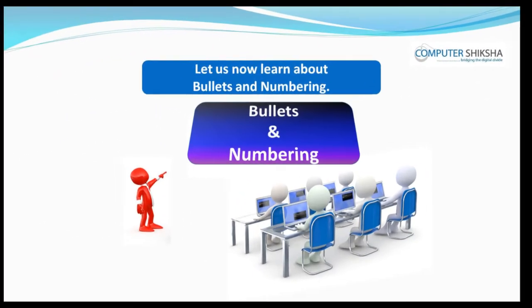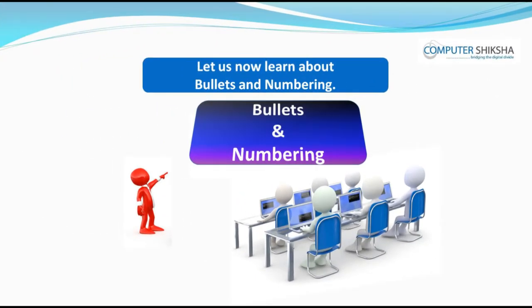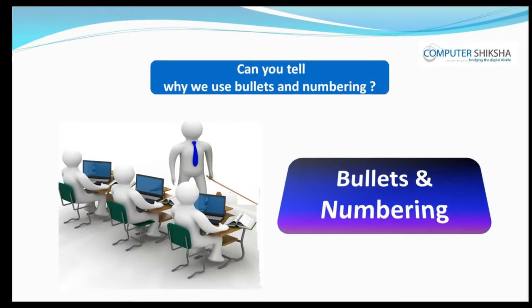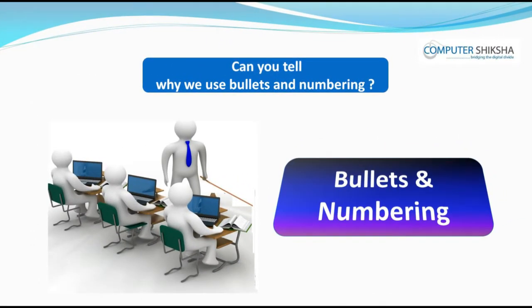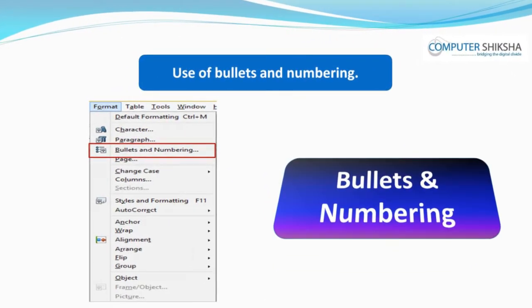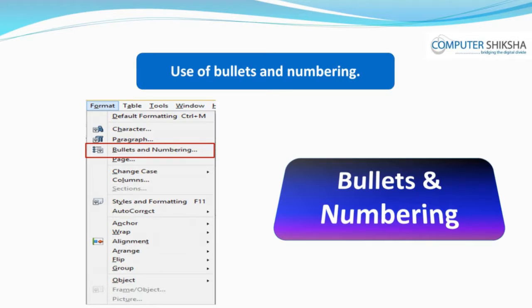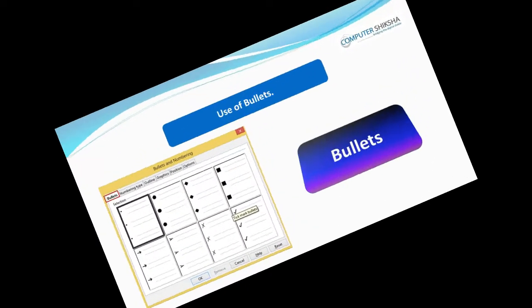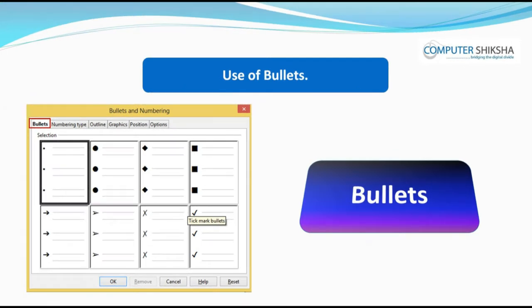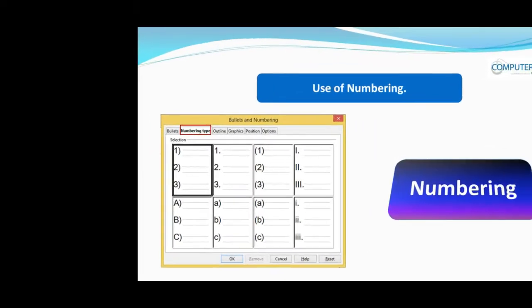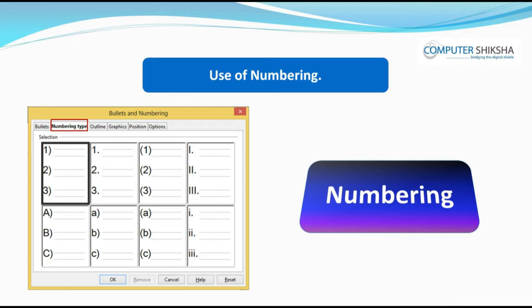Let us now learn about bullets and numbering. Can you tell why we use bullets and numbering? If you want to prepare a list and want to put different types of symbols in front of these lines, then you can use bullets. Using the bullets option, you can put bullets in front of each line. If you want to put numbers in front of the lines, then you can use numbering.